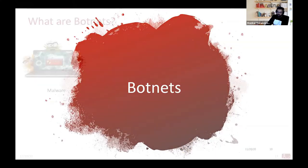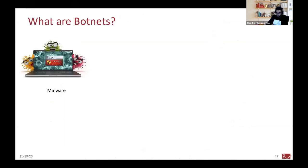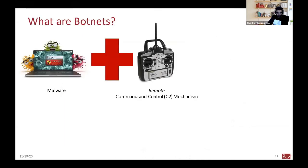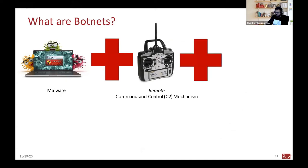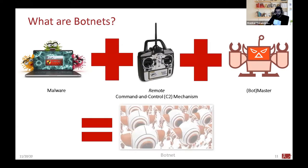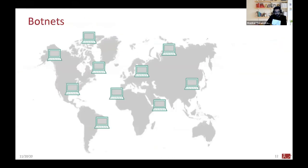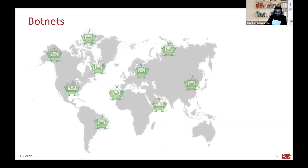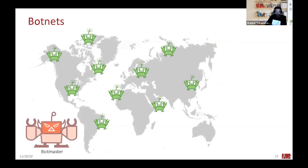Botnets are malware-infected machines with a component of remote control — call it C2 — plus someone to control them, the bot master. When you have those three components, you have a botnet. More technically, a botnet is a set of nodes distributed around the globe infected with malware, called zombies or bots, controlled by a bot master to carry out malicious activities on behalf of the bot master.